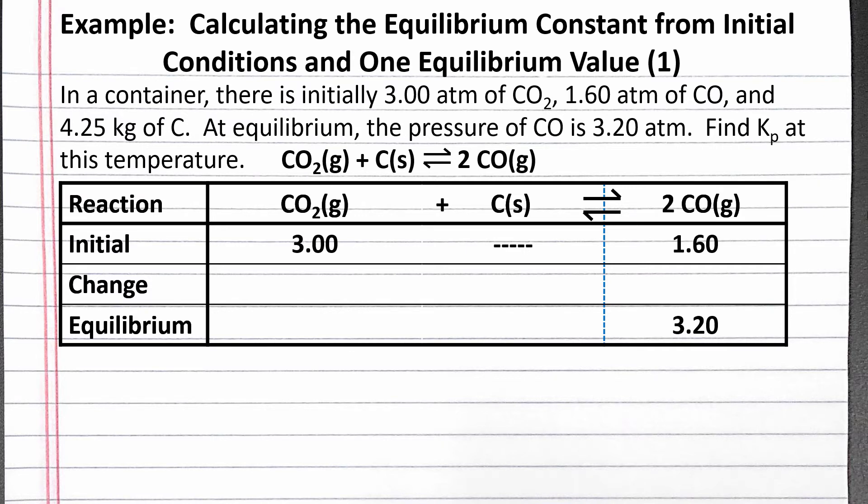So the change is negative x for carbon dioxide and positive 2x for carbon monoxide. The 1 and 2 coefficients before x come from the coefficients in the balanced chemical equation. If we add together the initial and change rows, we will get the equilibrium row.